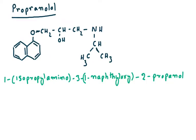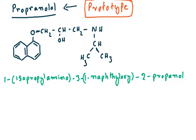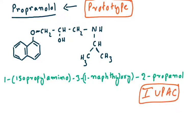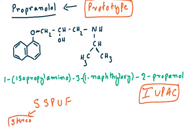Now coming to the drugs: propranolol is called the prototype drug of beta blockers — it is the first drug to be manufactured and synthesized. Let us see the chemistry aspects of this drug. For IUPAC nomenclature you need to follow a certain order, which I mnemonically write as YSSPUF.